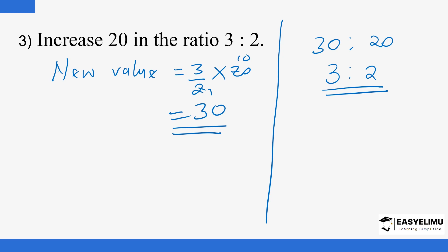The new value of 20, when increased in the ratio of 3 to 2, gives us 30. It is basically 3 over 2 multiplied by 20 to give us 30.